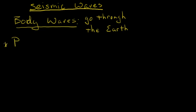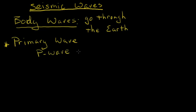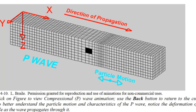The first one is the primary wave, also known as the P wave. It is the fastest of the waves. I'm going to go to this website that gives a very good animation of how the primary wave moves.